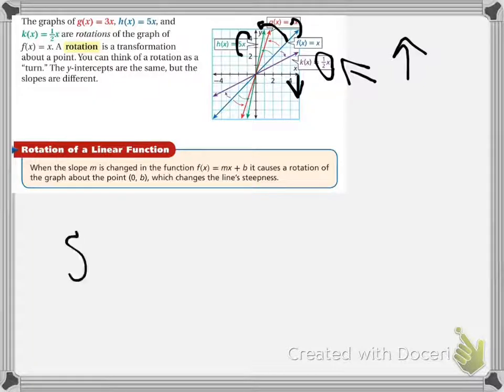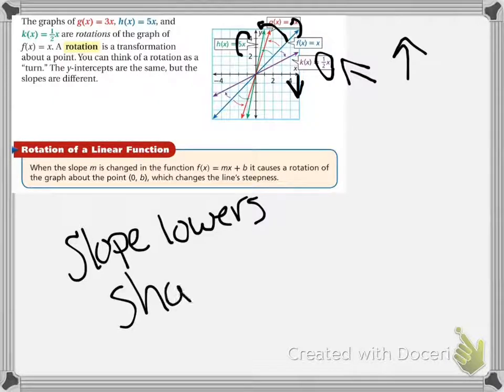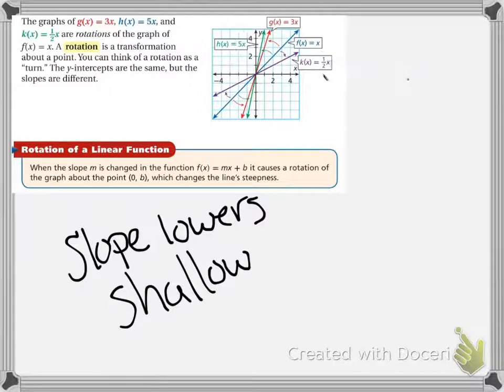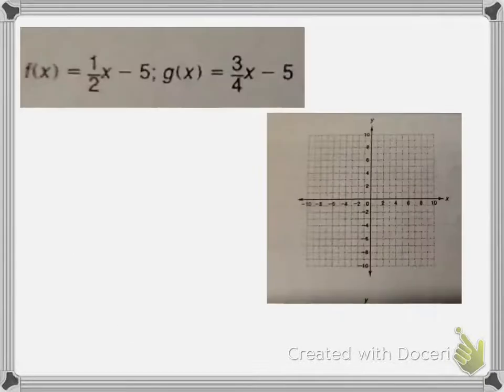If the slope lowers, then it's going to be a shallower line, less steep, as you can see from the blue to purple. If the slope increases, then the steepness gets higher and higher. If they changed the slope also to a negative, then it would have changed the side of the y-axis that it's on, so then it becomes not only a rotation but also a reflection. Notice in these, all of the y-intercepts remain exactly the same.